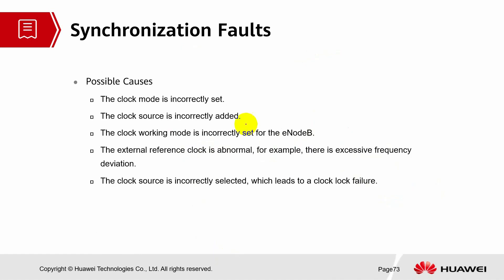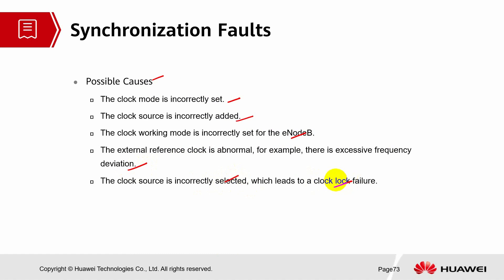Let's look into the possible causes. The clock mode may be incorrectly set — this is a configuration issue. The clock source may be incorrectly added, or the clock working mode may be incorrectly set for the eNodeB. The external reference clock could also be abnormal, for example due to excessive frequency deviation or an incorrectly selected clock source, which leads to a clock lock failure.